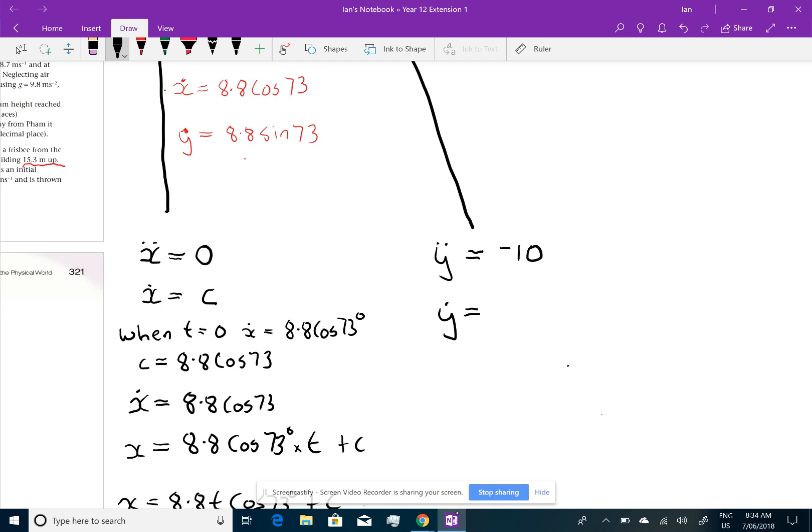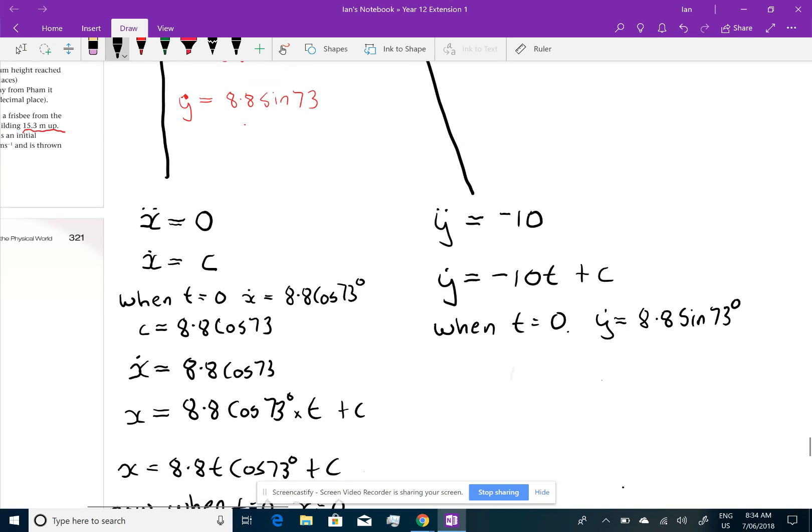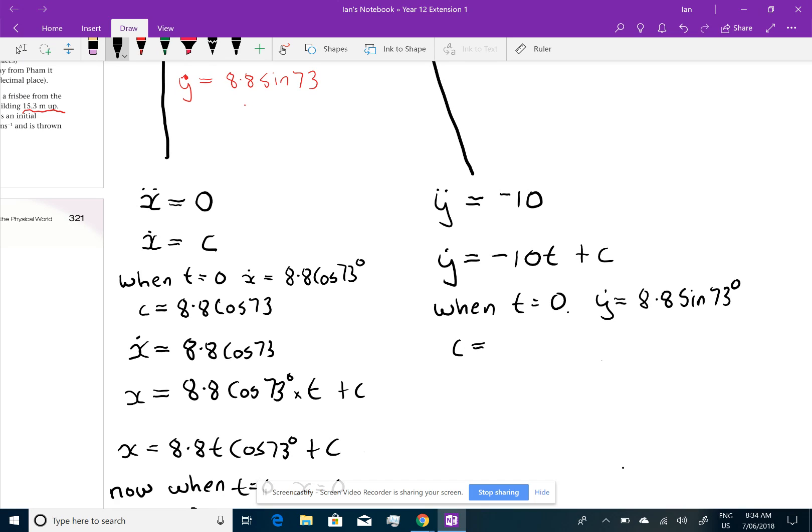y dash, let's integrate it, negative 10 t plus some constant. Now, when t equals 0, the velocity in the vertical is 8.8 sin 73 degrees, which means my constant, when I put all that in, will be 8.8 sin 73 degrees. So, my velocity in the vertical is minus 10 t plus 8.8 sin 73 degrees.